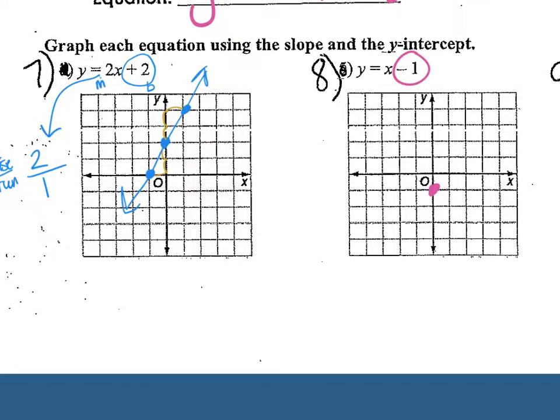The slope they gave me was just x. So what is that in number form? It's just 1. To make it a fraction like we like to see in slope, 1 over 1. So then I can use that for my starting point, rise 1 and run 1. I'm going to rise and run.